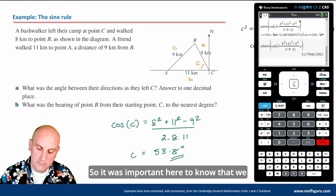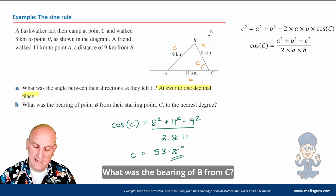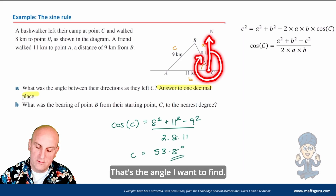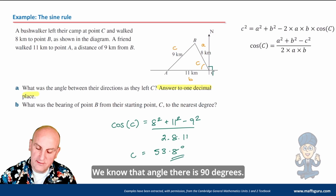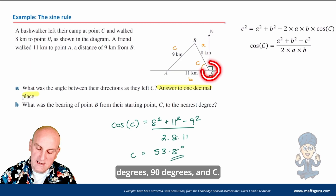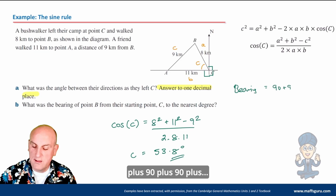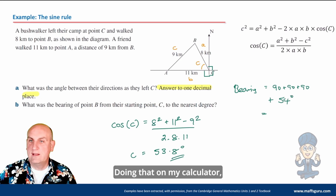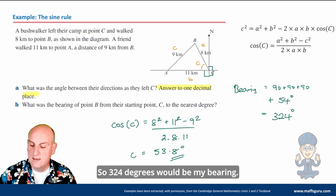Don't forget the degrees — the question asks for one decimal place. Now find the bearing of B from C: starting at C, turn clockwise all the way around to face B. That bearing is made up of three 90-degree steps plus angle C. Rounding 53.8 to the nearest degree gives 54 degrees. So the bearing is 90 plus 90 plus 90 plus 54 equals 270 plus 54 equals 324 degrees — already three digits, so the bearing is 324 degrees.